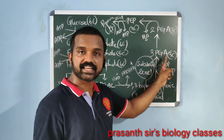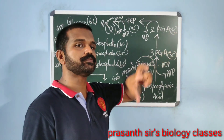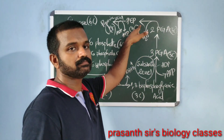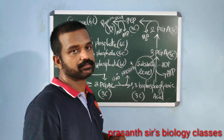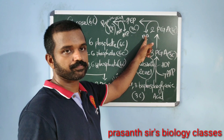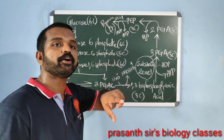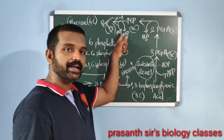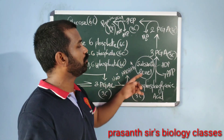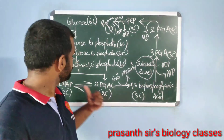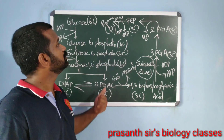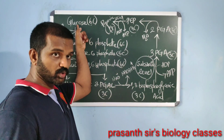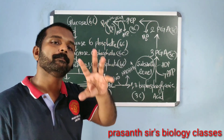Next, 3-phosphoglyceric acid is converted into 2-phosphoglyceric acid — the phosphate group is shifted from the third to the second carbon atom. Then 2-phosphoglyceric acid is converted into PEP (phosphoenolpyruvic acid); dehydration occurs during this step. Finally, PEP is converted into pyruvic acid, the end product of glycolysis. The released energy is accepted by ADP to form ATP via substrate-level phosphorylation. Since there are 2 molecules of 3-carbon compounds, we get 2 molecules of pyruvic acid from 1 molecule of glucose.